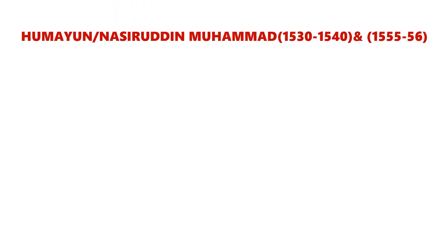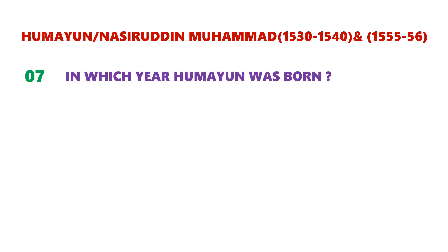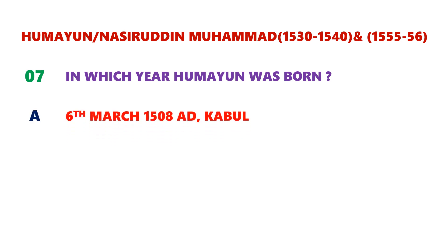After the death of Babar, his son Humayun or Nasiruddin Muhammad became the ruler of Mughal Empire. His tenure was from 1530 to 1540 and again from 1555 to 1556. Question number seven: in which year was Humayun born? Humayun was born on 6th March 1508 at Kabul.